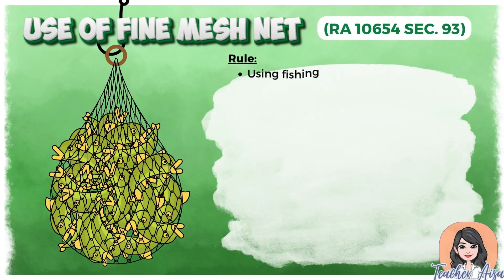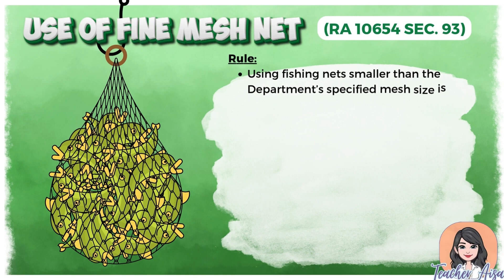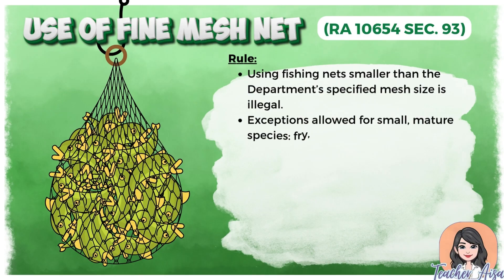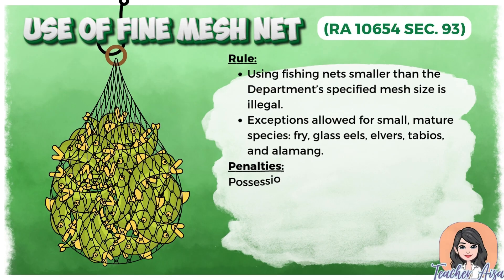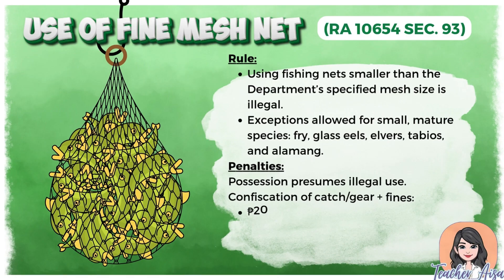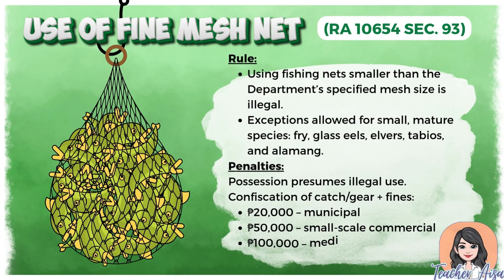The use of fishing nets smaller than the sizes specified by the department is prohibited, except when catching small mature species such as fry, glass eels, elvers, tabios, and alamang. Possession of a fine mesh net is presumed illegal, and violators face confiscation of their catch and gear, along with fines ranging from 20,000 pesos for municipal fishing, 50,000 for small-scale commercial fishing, to 100,000 for medium-scale commercial fishing.